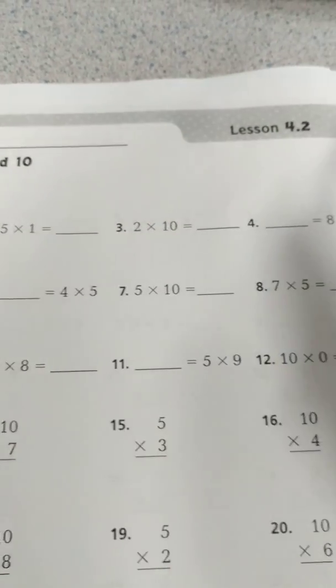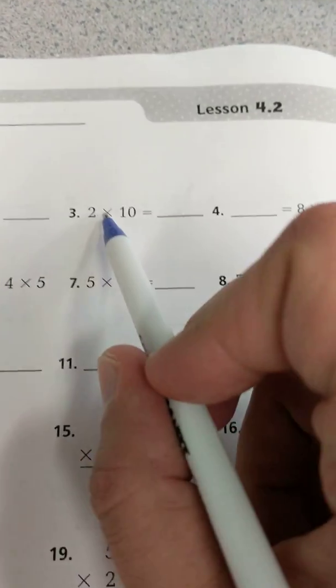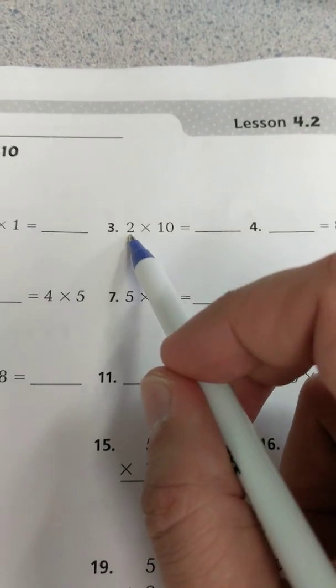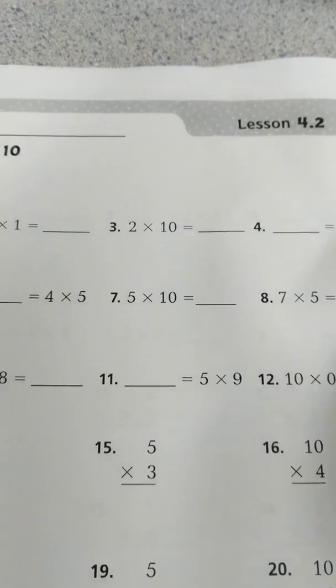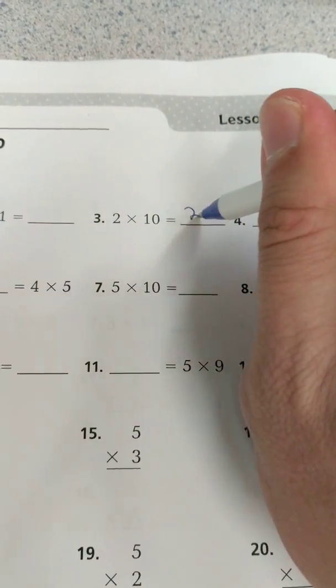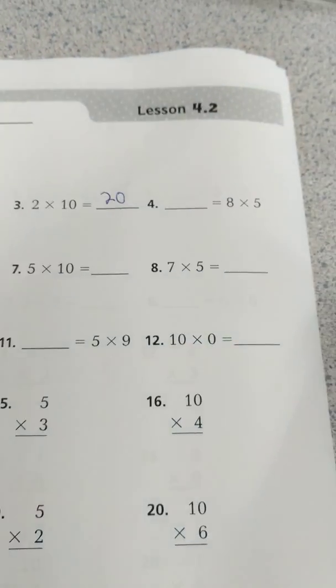So I'm going to skip the first one. Let's just go to number 3. So 2 times 10. That means there's two 10s. So 10 plus 10, or 10, 20. Let me count by 10s.